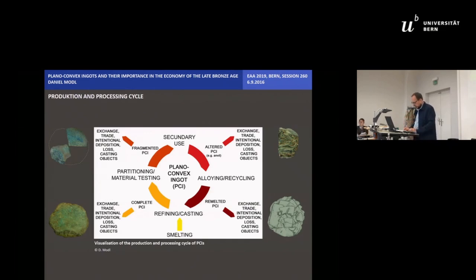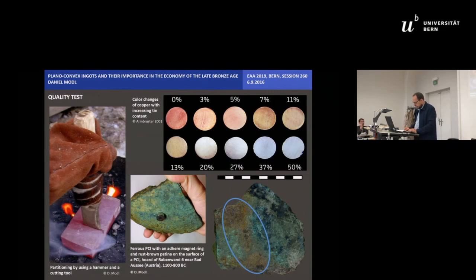Particularly annoying in the further processing were higher contents of iron. Sometimes they lie above 3% per weight. Today you can see this increased iron content through chemical analysis as well as on rust brown patinas or by using a magnet.